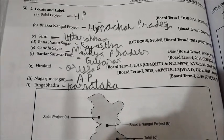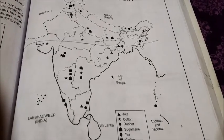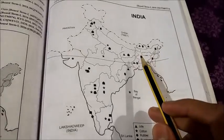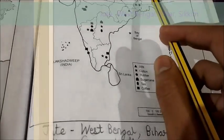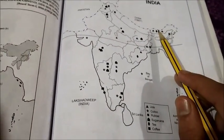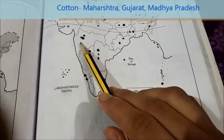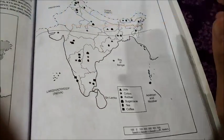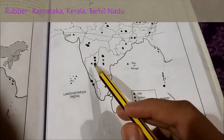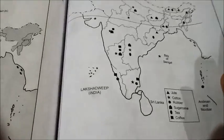Now let's look at where various crops are grown across the country. You need to memorize two to three places for each crop. Jute is mainly concentrated in the eastern belt — remember West Bengal, Bihar, and Sikkim. For cotton, it's in the black soil belt — Maharashtra, Gujarat, and Madhya Pradesh. Rubber is primarily in the southern states — Karnataka, Kerala, and Tamil Nadu. Sugarcane is both in the west and the northern plains — Maharashtra, Uttar Pradesh, and Haryana.